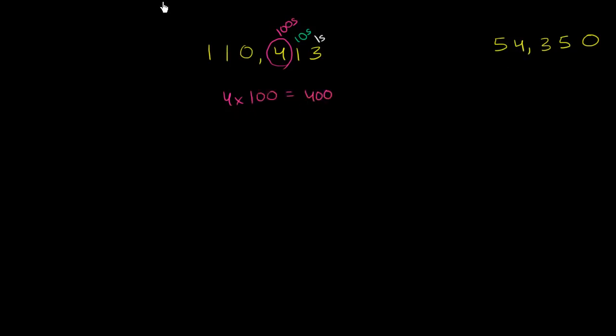Now what about this four? Once again, you have zero ones, you have five tens, you have three hundreds. And you have four thousands.